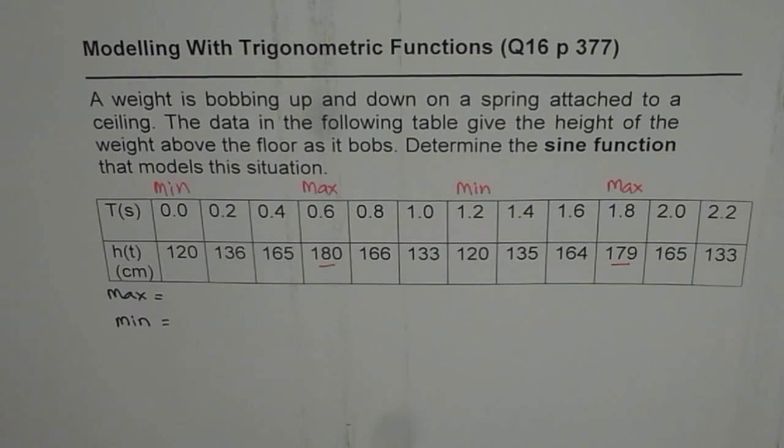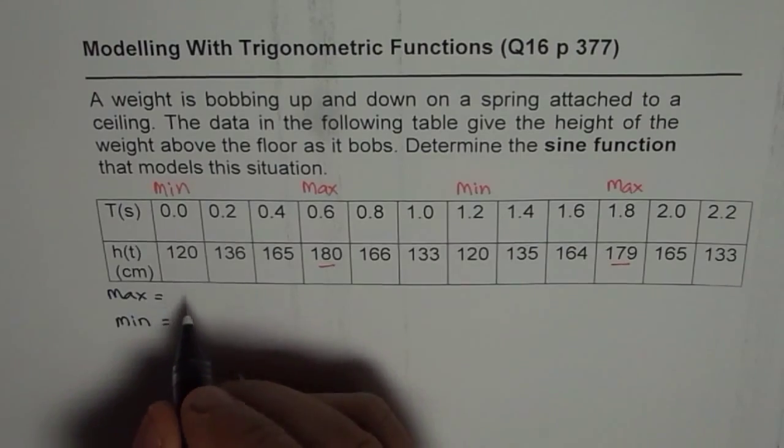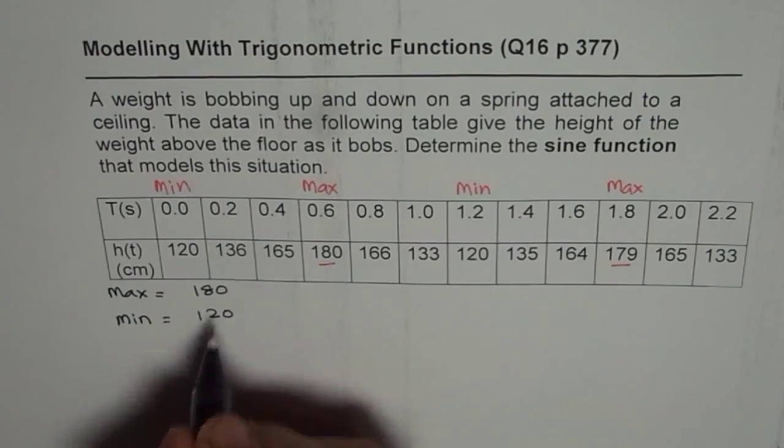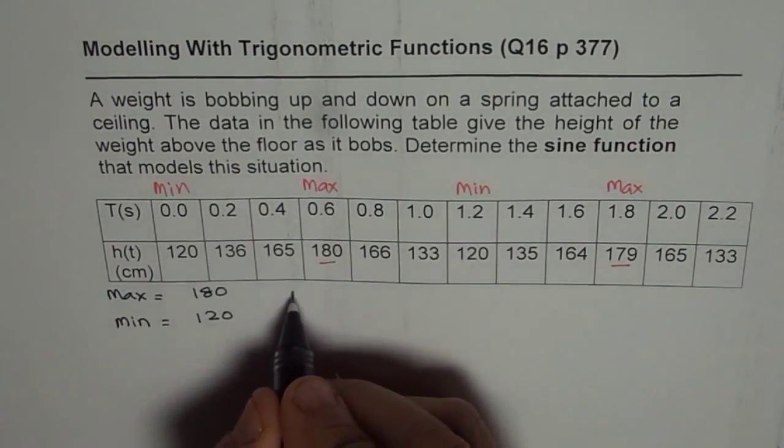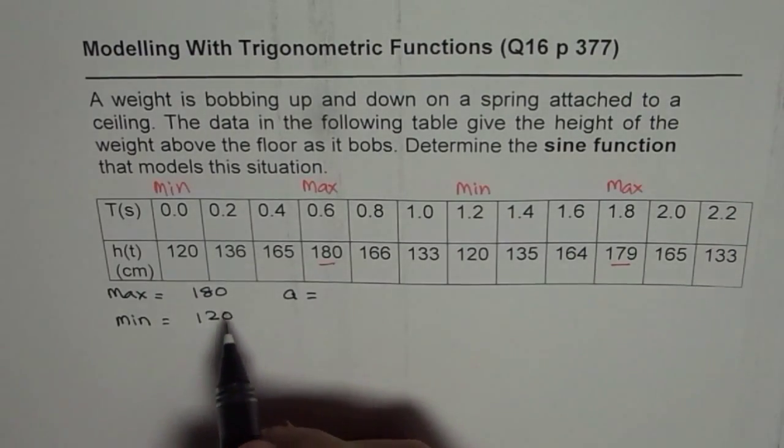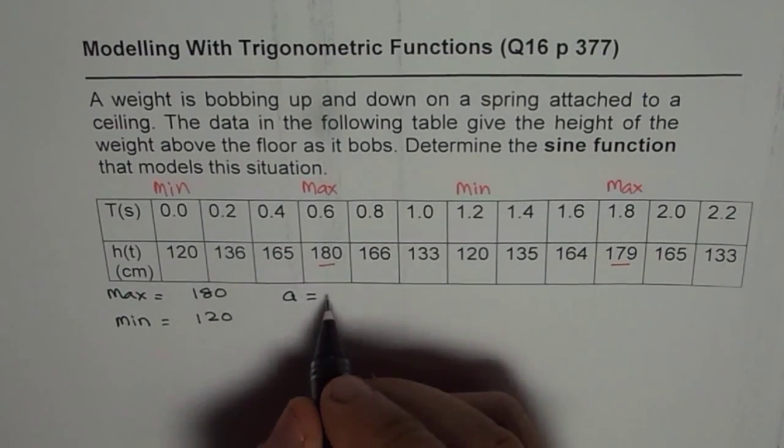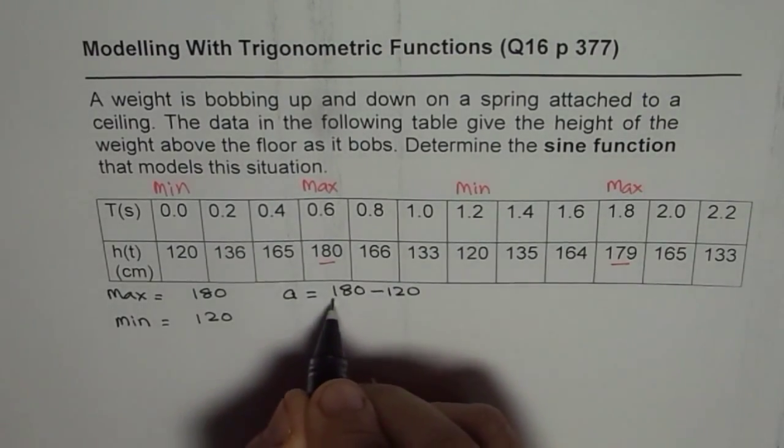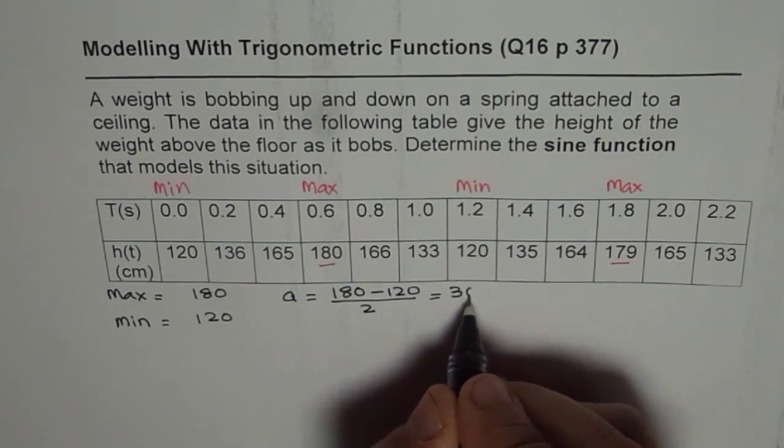So let us see how. So as seen from the data, maximum value is 180 and the minimum value is 120. Now from here, we can write A, the amplitude, is difference of these two divided by 2. So it is 180 minus 120 divided by 2 and that is 60 divided by 2 as 30.